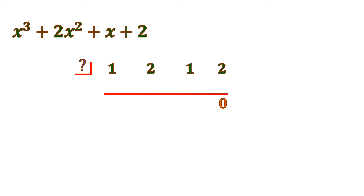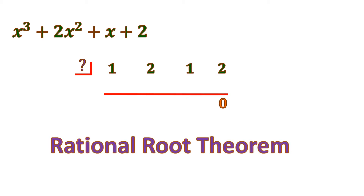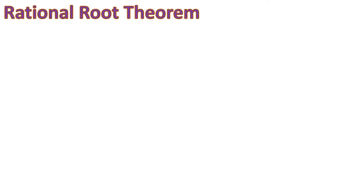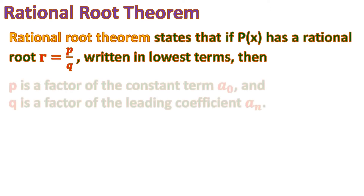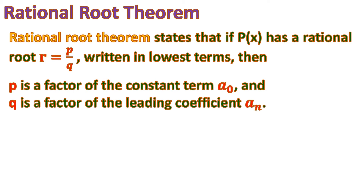There is a theorem that can narrow down the options to test: the rational root theorem. It states that if a polynomial p(x) has a rational root r = p/q written in lowest terms, then p is a factor of the constant term a₀, and q is a factor of the leading coefficient aₙ. The theorem is named 'rational root' because the root forms a ratio — it's p over q.